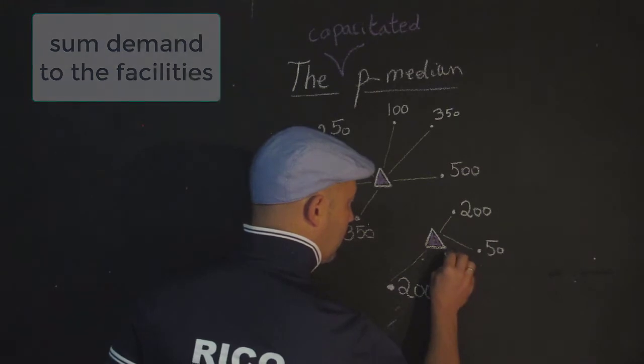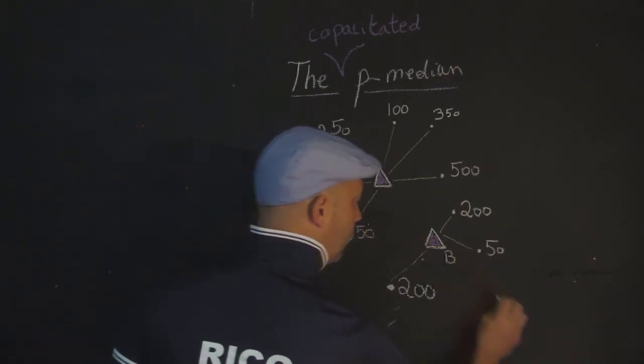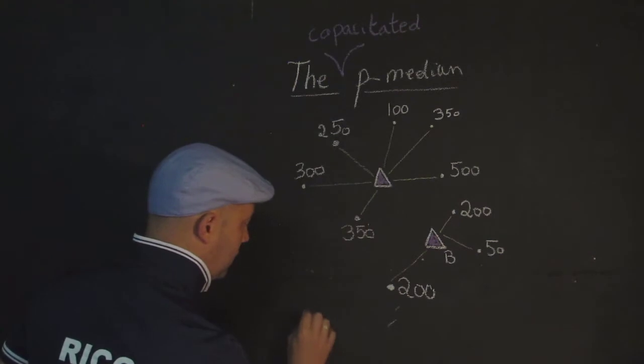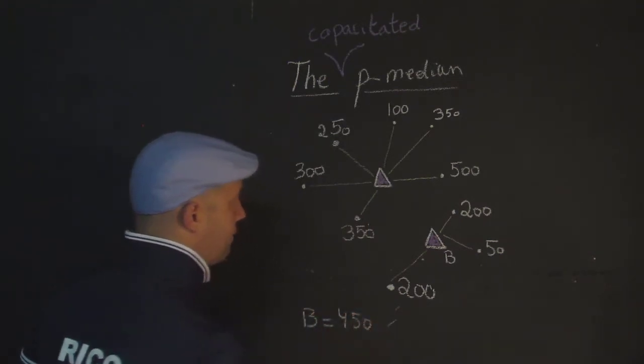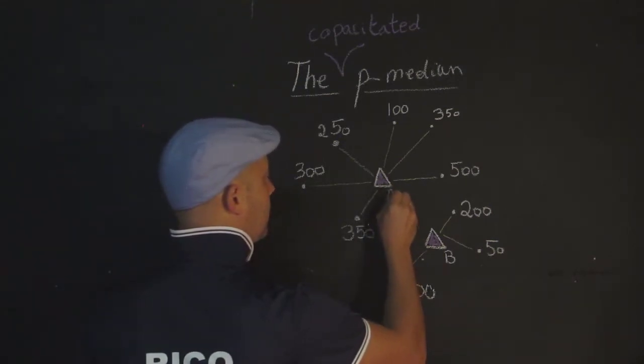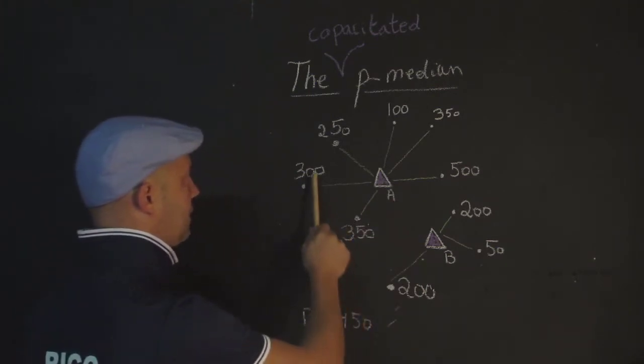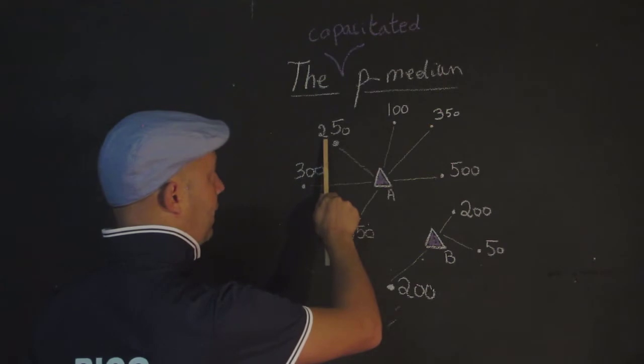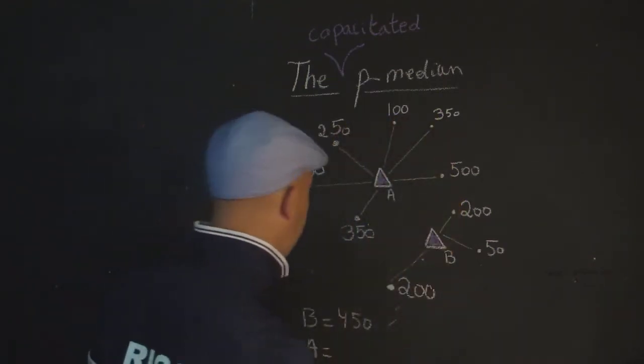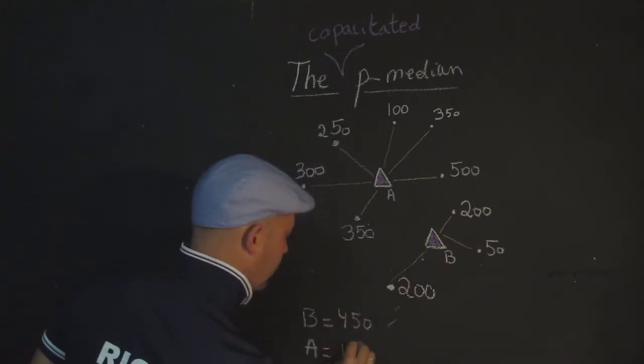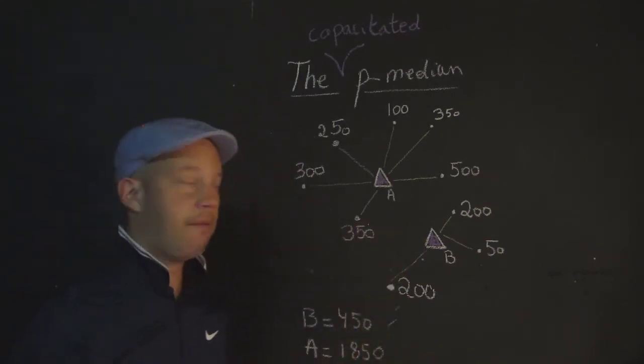And if we sum up the amount of demand that has been assigned to both facilities, I'm going to start with an easy one here. We see that, so let's call this one B, we see that for B the total is 450 that has been assigned. And then for the other one, let's call it A, we've seen that there is 350, 650, we are now at 900, 1000, 1350, 1850.